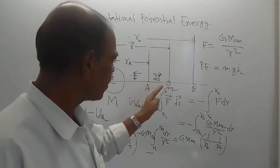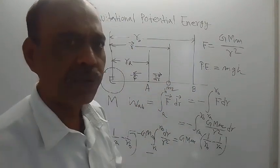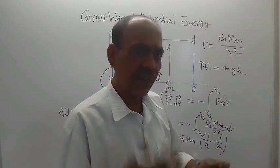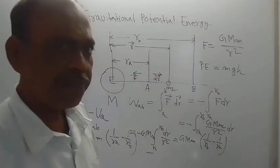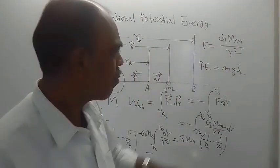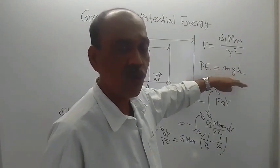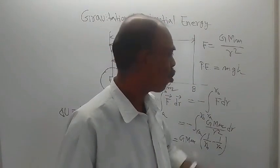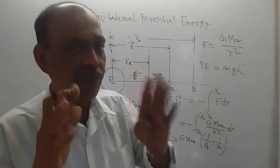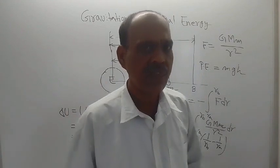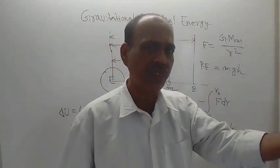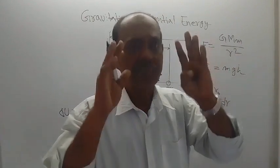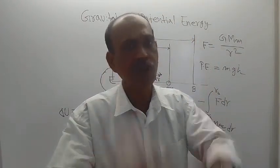This result for potential energy — mgh — is valid only near the surface of the Earth, where the change in acceleration due to gravity is neglected, meaning g is taken to be a constant quantity. In that case, potential energy can be calculated as mgh. The more general formula here is applicable for any distance, where g is changing. The radius of the Earth is 6400 km, so h should be very very less than that value — like 500 km, 1000 km, 200 m, or 50 m — negligible compared to the radius of the Earth.